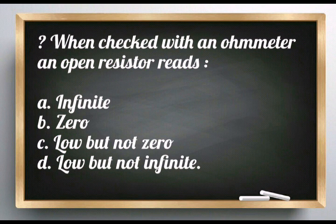Question: When checked with an ohmmeter, an open resistor reads: infinite, zero, low but not zero, or low but not infinite.